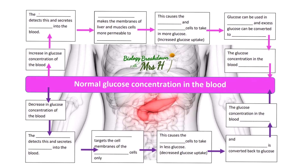This can be summarized in the flow chart here, and if you would like a copy of this flow chart then click on the link in the description. Here you can see the normal glucose concentration in the blood. When there is an increase in glucose concentration of the blood, the pancreas detects this and secretes insulin into the blood. Insulin makes the membranes of the liver and muscle cells more permeable to glucose, causing the liver and muscle cells to take in more glucose — in other words, increased glucose uptake. Glucose can be used in respiration and the excess glucose can be converted to glycogen.